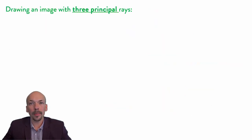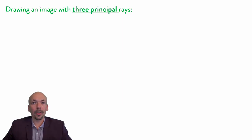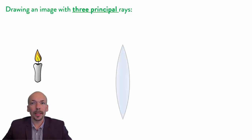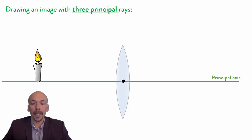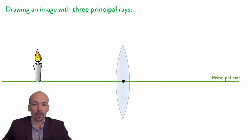We can draw the image using three principal rays. First we need a lens and an object, and we will draw the image from this object through the lens. We also need the optical center and the principal axis, which we can draw as a straight line through the optical center. We will also get the two foci — the two focus points.